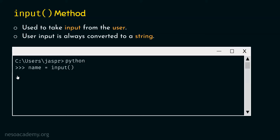Now let's hit enter. As soon as we hit enter, we can type the name. Let's say the name we want to provide is John. We want to store this name within the name variable. Let's hit enter again. We can see the prompt again, which means the name is accepted as input by Python. Let's type name and hit enter — we will see that name is pointing to the string John.